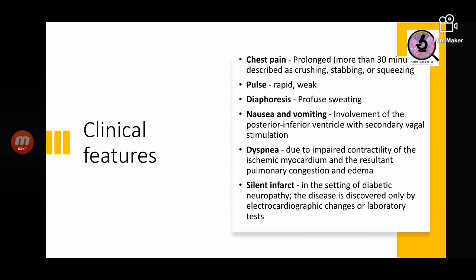The typical clinical features of myocardial infarction include chest pain — prolonged, lasting more than 30 minutes — described as crushing, stabbing, or squeezing pain. The pulse is weak and rapid. The patient experiences diaphoresis — profuse sweating — as well as nausea and vomiting due to secondary vagal nerve involvement. Impaired contractility of the heart may lead to pulmonary congestion and edema. Silent infarct is seen in diabetic patients due to neuropathy.